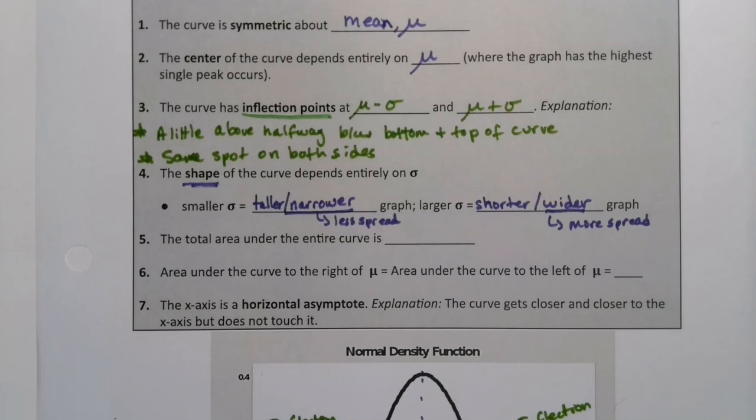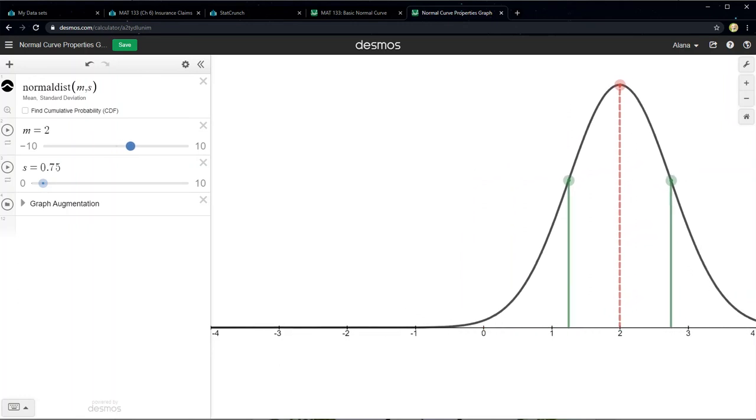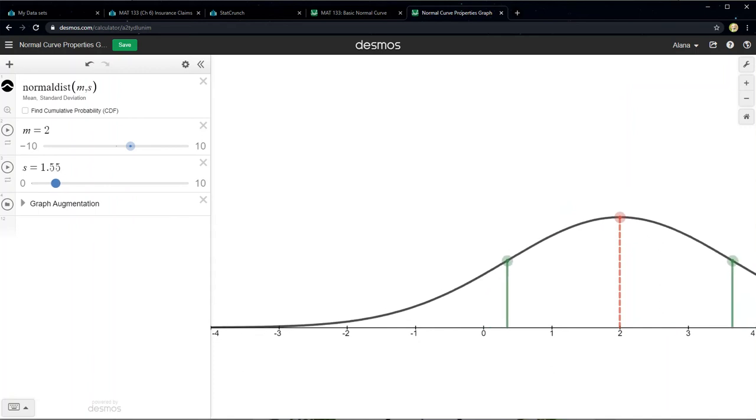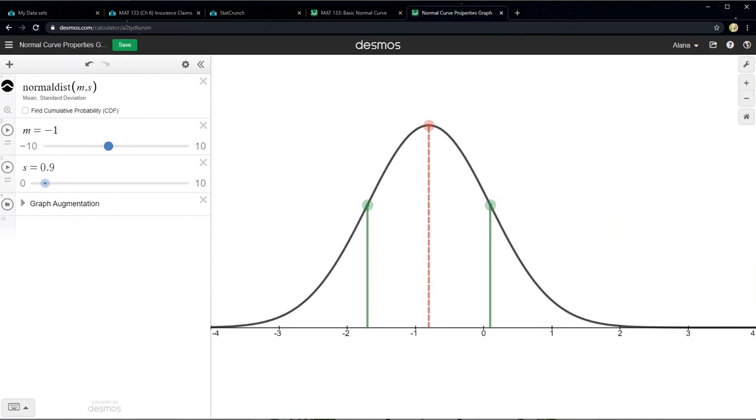So if I move this curve over, it still has the same shape, right? What changes the shape of it is the standard deviation. Standard deviation changes the shape. The mean changes where the middle is.